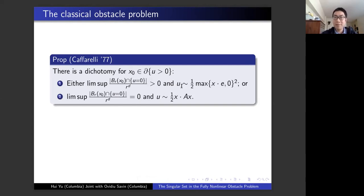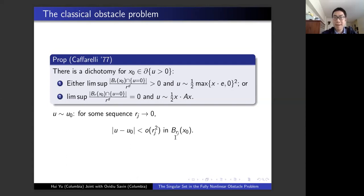What I mean by the function looking more or less like a half-space solution or a parabola is the following: in a sequence of balls with vanishing radii, my solution is well approximated by u_0, in the sense that the difference goes to zero faster than the quadratic rate of the radii. There are only two possibilities: either you have positive density, meaning real contact, in which case the solution is well approximated by a half-space solution; or the contact set has zero density, so there is only tangential contact, and your solution is well approximated by a full parabola.